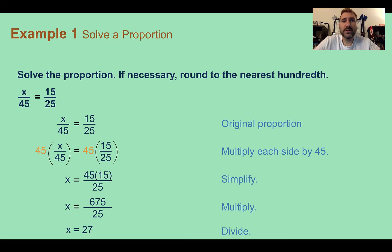Example 1, solve a proportion. Solve the proportion, if necessary, round to the nearest hundredth. We're given the ratio of x over 45 is equal to the ratio of 15 over 25. Just two fractions equal to each other.